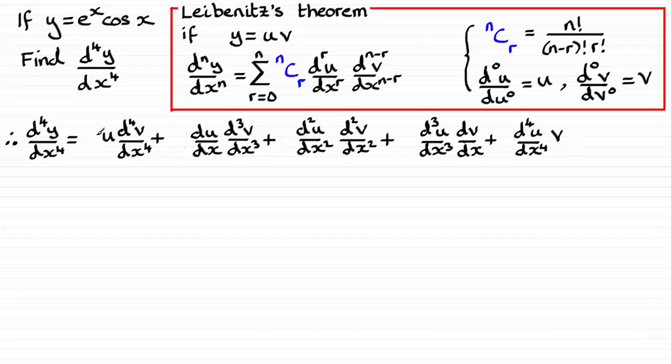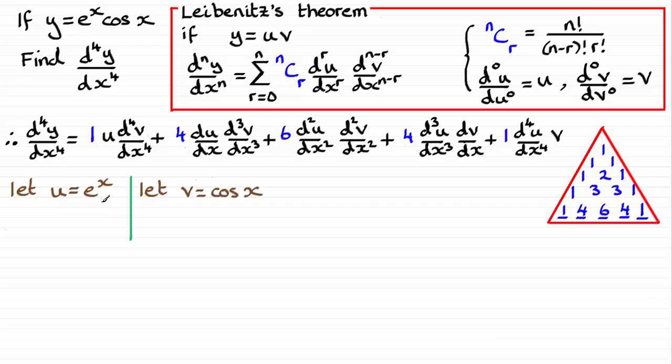Then I've got to work out the coefficients that go in front of these terms. And we can either use ncr values through this formula, or use Pascal's triangle. Those values would be the 1, 4, 6, 4, 1 that we've got here. So I'll just put those in. Obviously, we don't need those ones there, I'm just putting them in as a token. Now, what I need to do next is just look at what we've got for u and v.